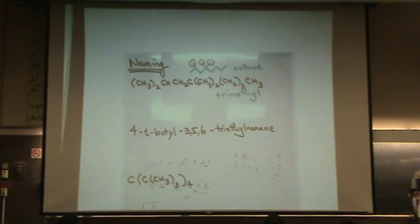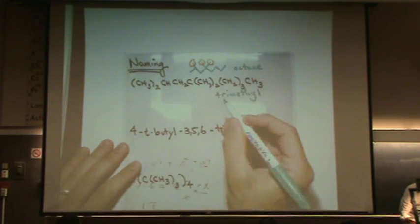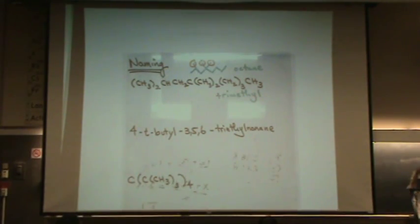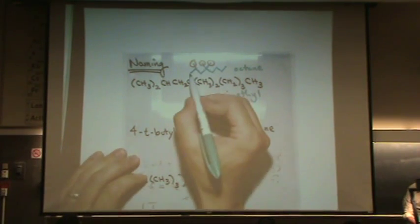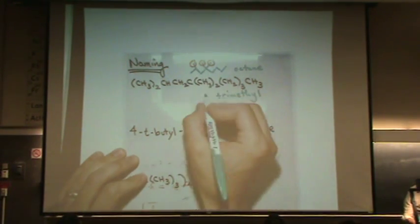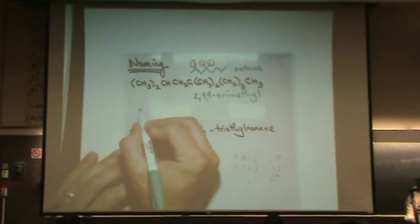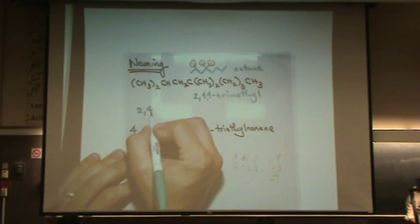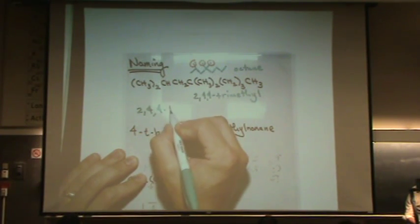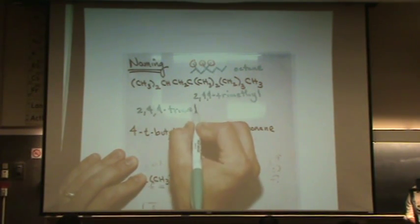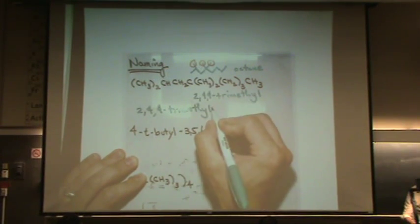The last thing I want to do is get the numbers straight so I can put it in my template. If I number from the left-hand side, that will give me the lowest numbers. So that would be two, four, four. So the full name would be 2,4,4-trimethyloctane.